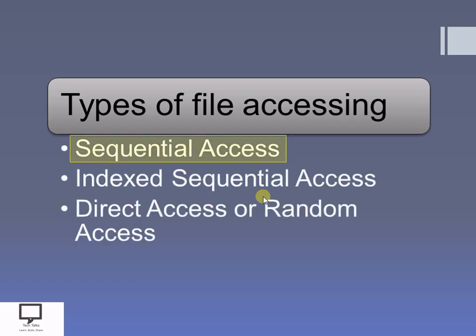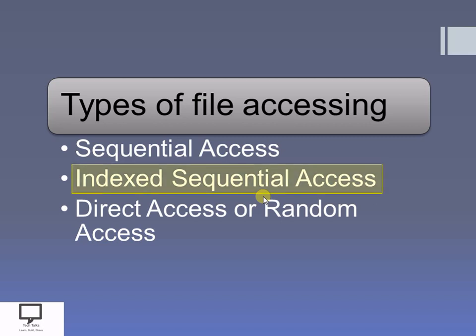Now let's see the different types of files that are helpful to access the data. The first one is sequential access, where all the records are accessed sequentially or in order. The second type is index sequential access, where all the records are accessed sequentially but with the help of an index. And now the last topic I am focusing on in this session is direct access file or random access file, where the records can be accessed directly or randomly.